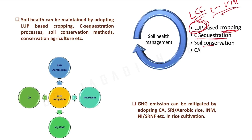We need to take soil conservation measures, since the topsoil is more fertile than subsoil — allowing soil erosion means losing topsoil and declining productivity. We should adopt conservation agriculture, whose three principles are minimum soil disturbance, permanent soil cover, and diversified crop rotation. To mitigate greenhouse gas emissions from rice cultivation, we can adopt the System of Rice Intensification (SRI) and aerobic rice cultivation, which use less water and produce much less methane than conventional rice production.